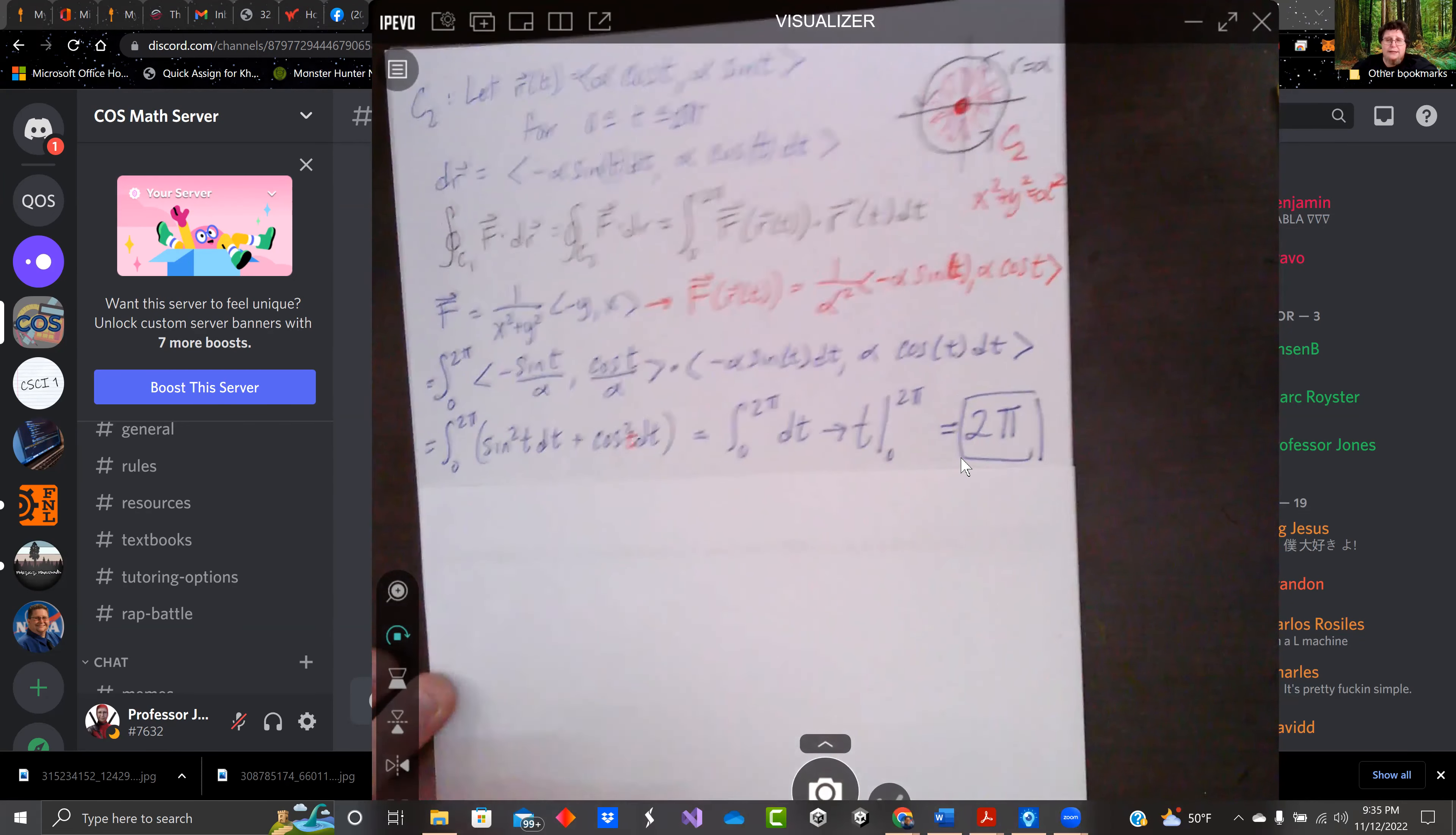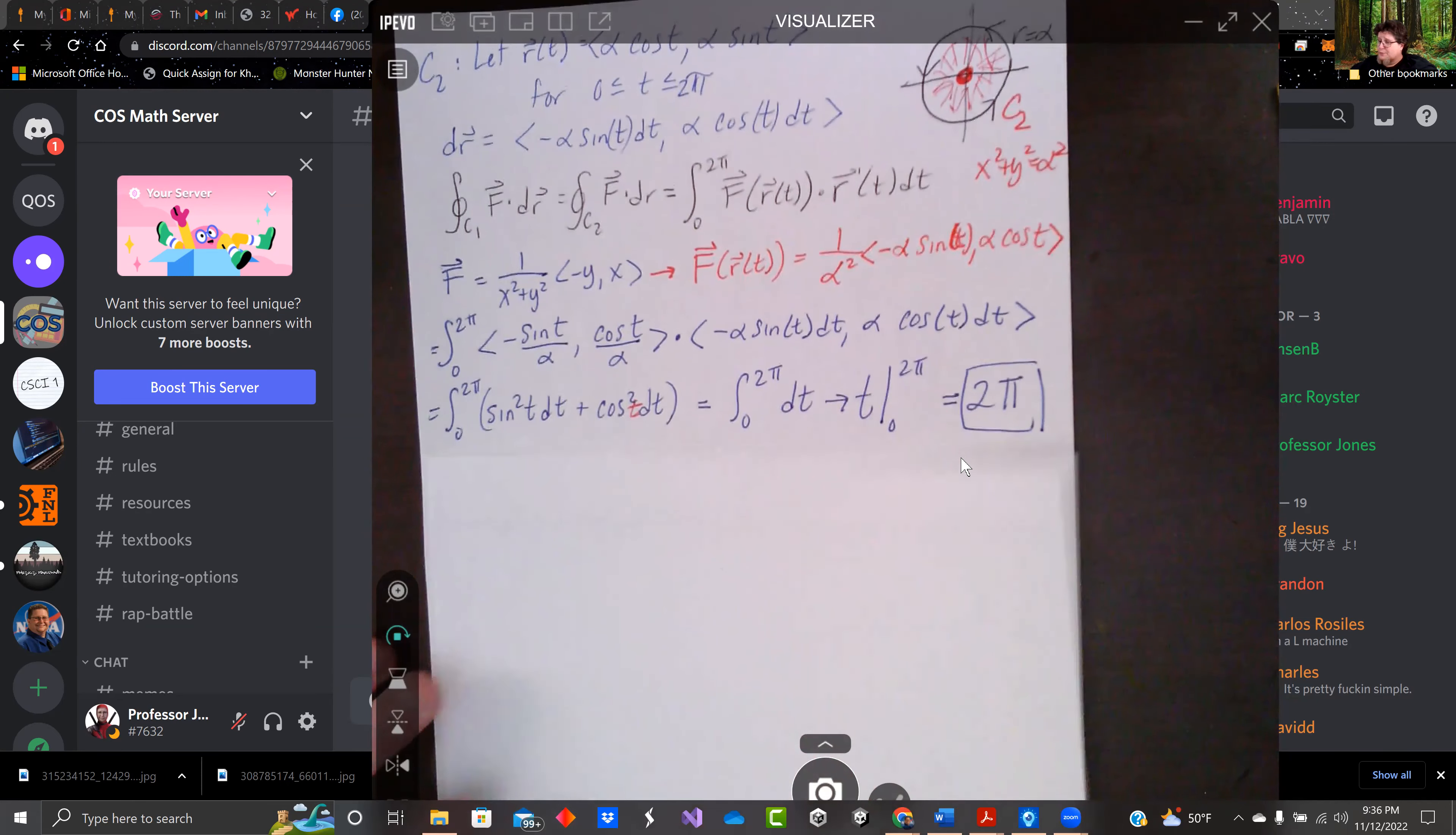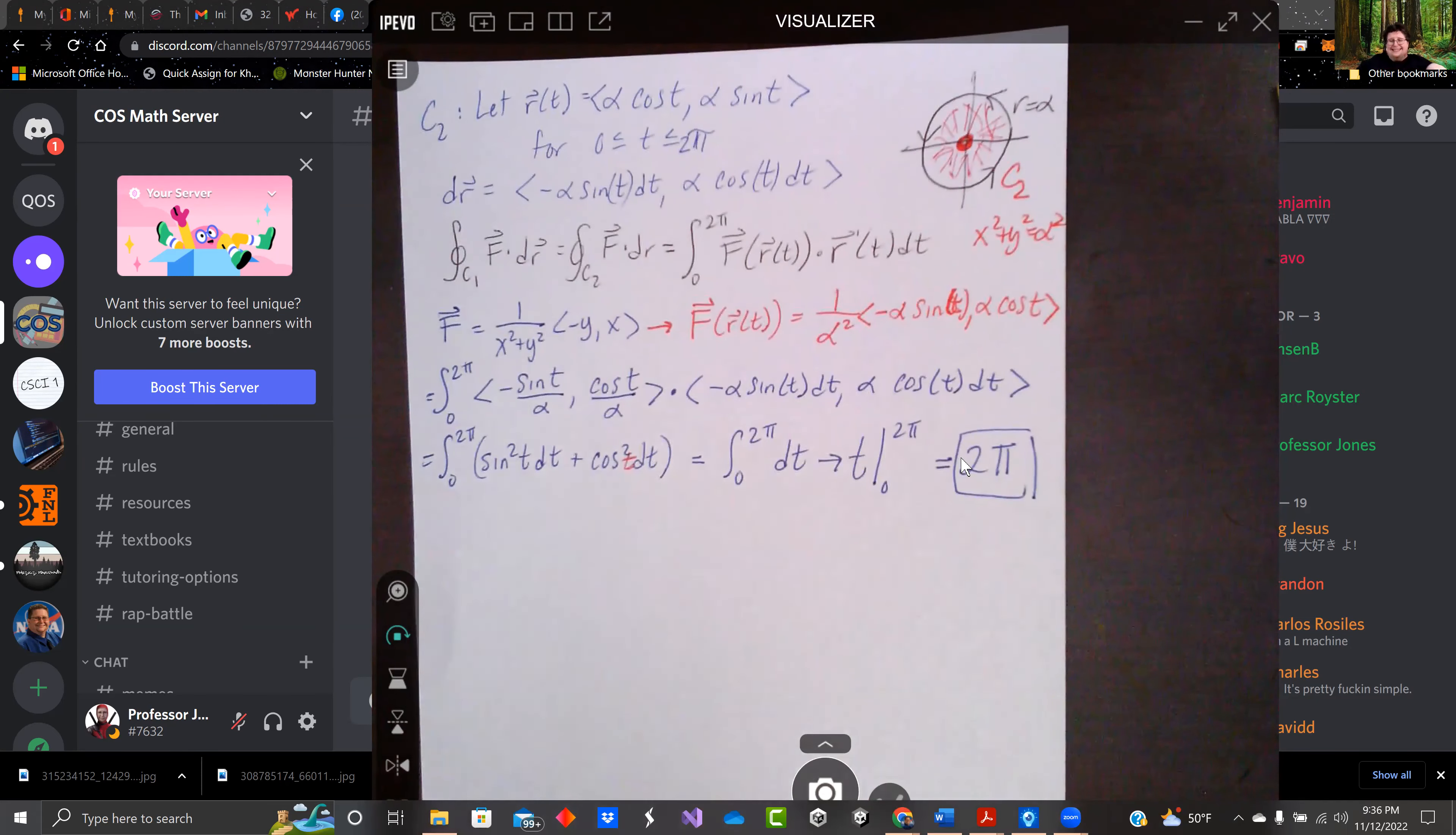Sine squared plus cosine squared equals 1. That's our unit circle. So zero to 2π. dt is just t going from zero to 2π, which is 2π. Bam. Done.